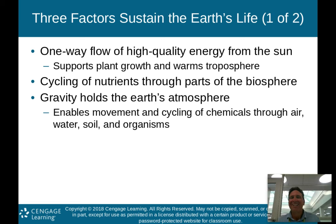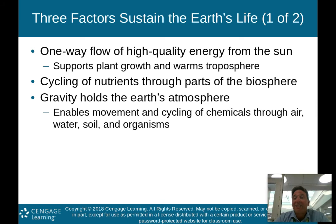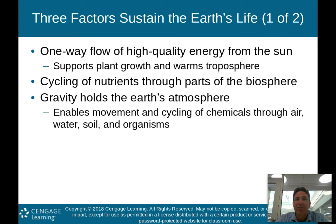There are three factors that sustain life on this planet. The first factor is the one-way flow of high-quality energy from the sun. The sun supports plant growth and warms the troposphere. Almost all processes on planet Earth need energy from the sun, making it the number one important factor for sustaining life.